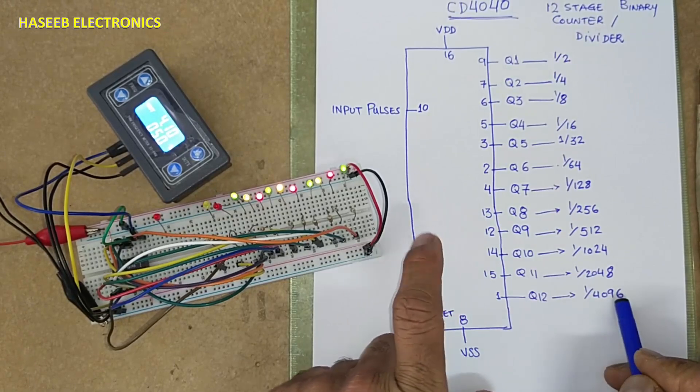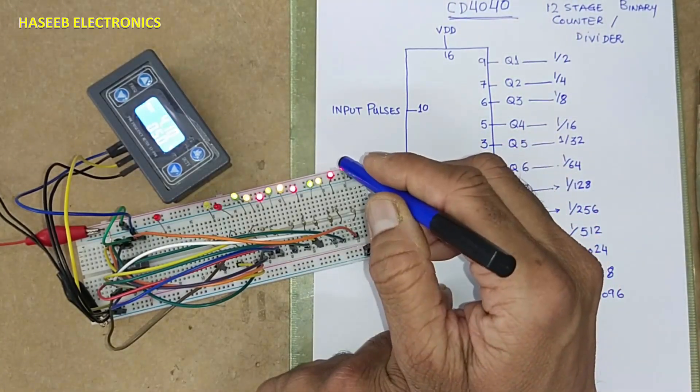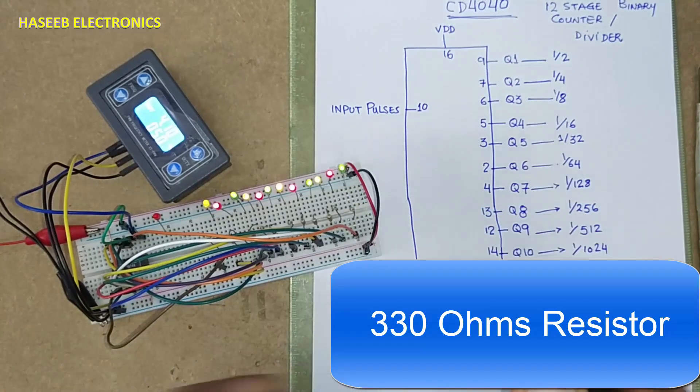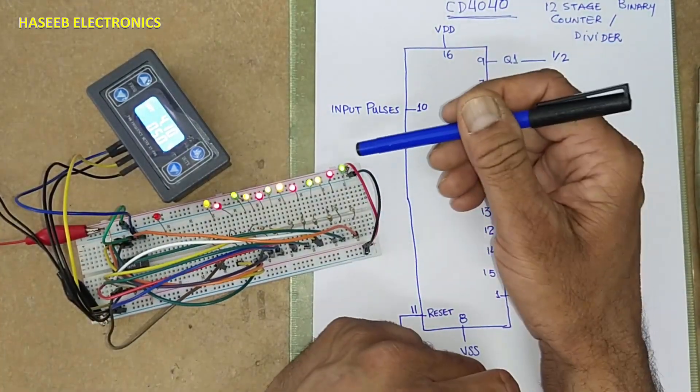To monitor the outputs, I connected LED. LED anode is connected to resistor. Resistor is connected to output pins. Cathode is grounded.